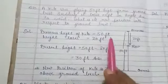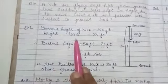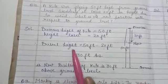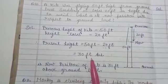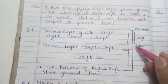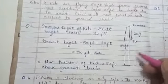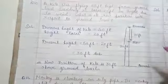So what will we write? Previous height of kite equals to 50 feet. Height lost is 20 feet. So present height equals to 50 feet minus 20, and it comes to be 30 feet. Means the new position of the kite is 30 feet above the ground level. This question is very simple. Now look at the next question.